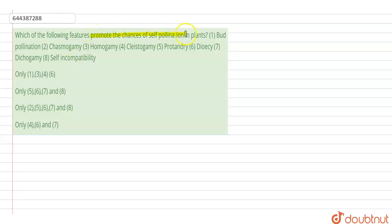Which of the following promote the chances of self-pollination? While we see that in plants there are two types of pollination...